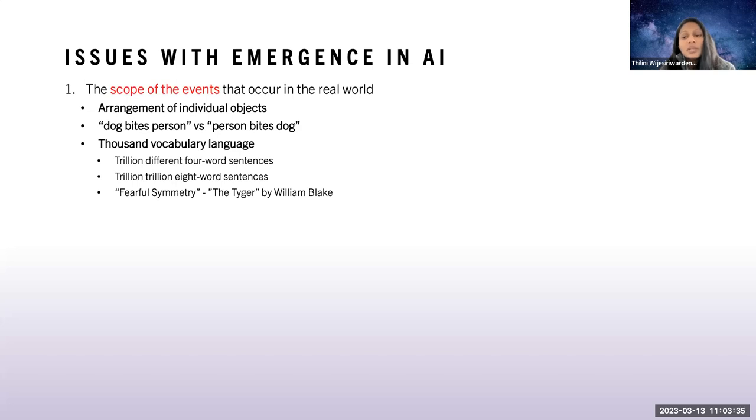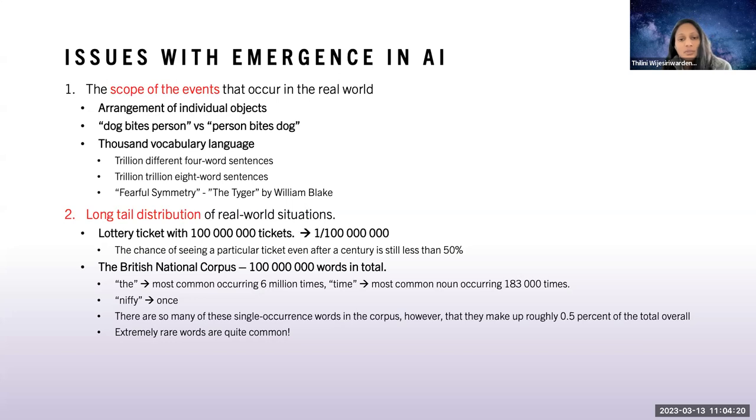For example, if you have a four-word English sentence in a thousand vocabulary language, the number of ways that you can arrange that sentence would be a trillion. And if you have an eight letter sentence, it's trillion trillion. It's huge. This explains why when we read new pieces of text, most of the time we feel like this is fresh and original. They take an example from a poem written by William Blake, The Tyger, just a pair of words fearful symmetry. These words if you take them by themselves are not remarkable, they're just normal words, but if you put them together that is the important thing.